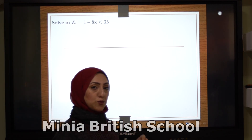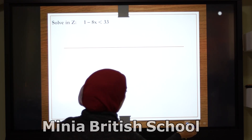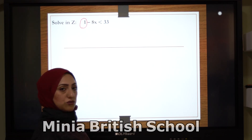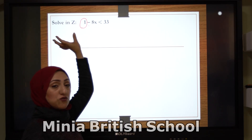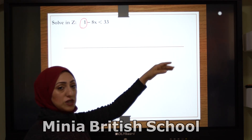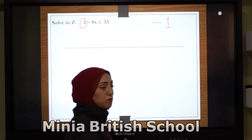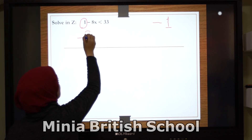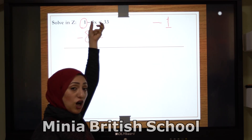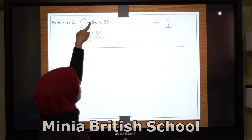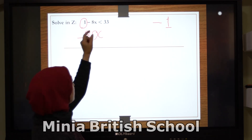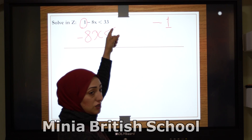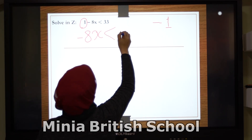This next example is very important because it's a little different. Here I want to get rid of this positive 1 — this is addition, so I subtract 1 from both sides. So 1 minus 1 equals 0, and the rest is negative 8x. On the right side: 33 minus 1 equals 32. So negative 8x is smaller than 32.